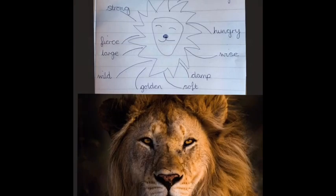If you have a look at this picture of a lion, I want you to draw a picture just like I did in the middle of your page. And just around that picture, I want you to see if you can describe what you can see — so describe that lion.